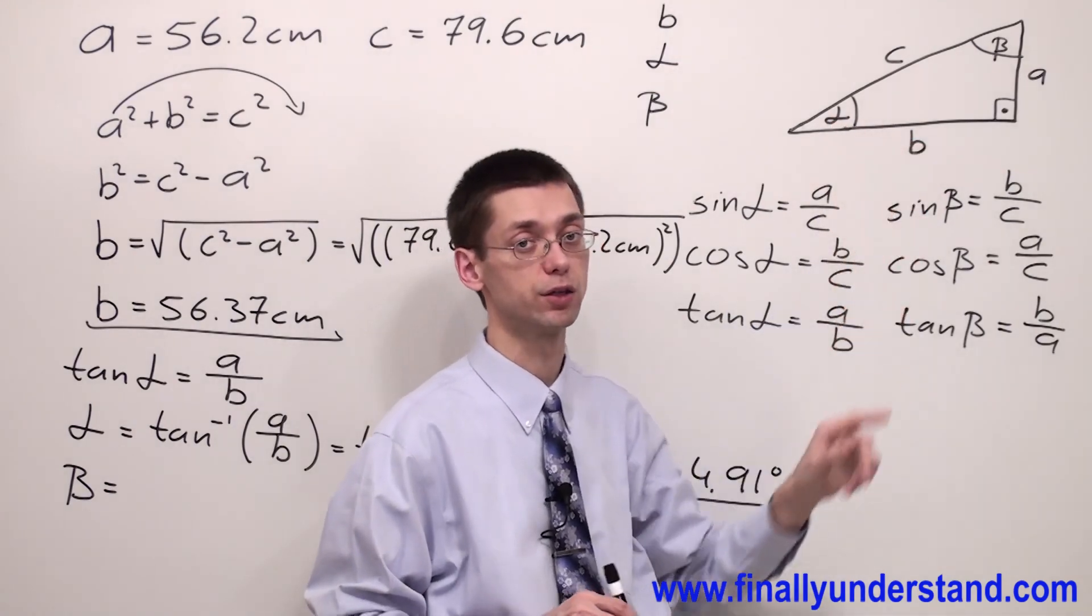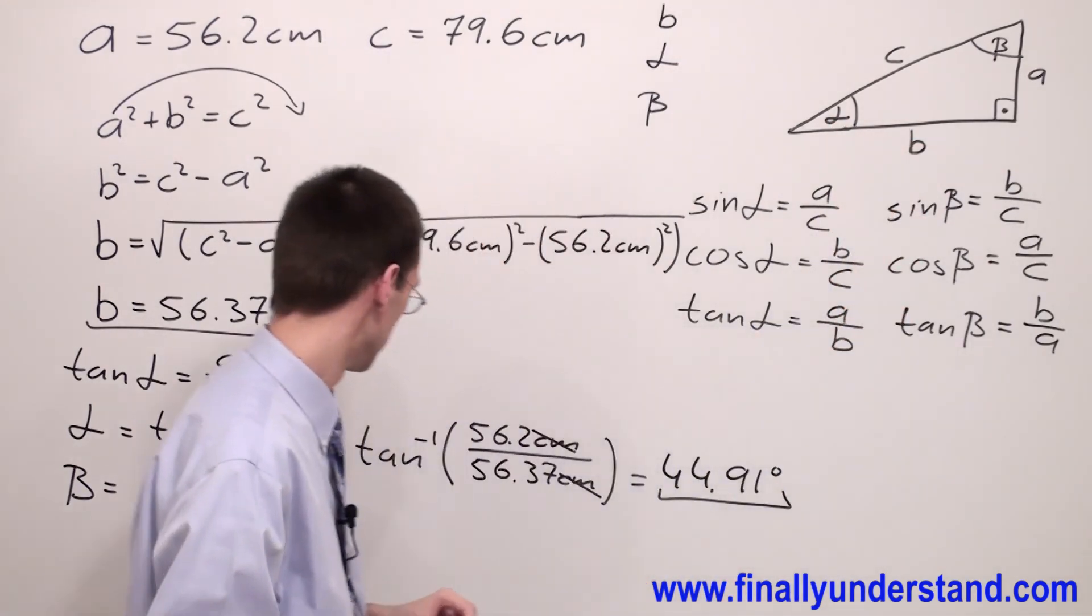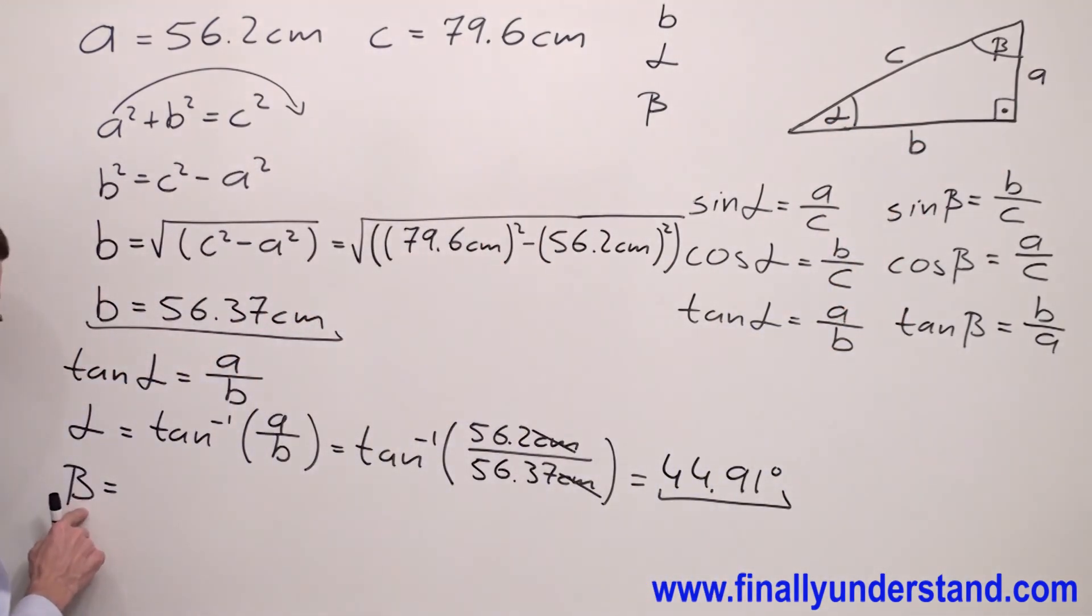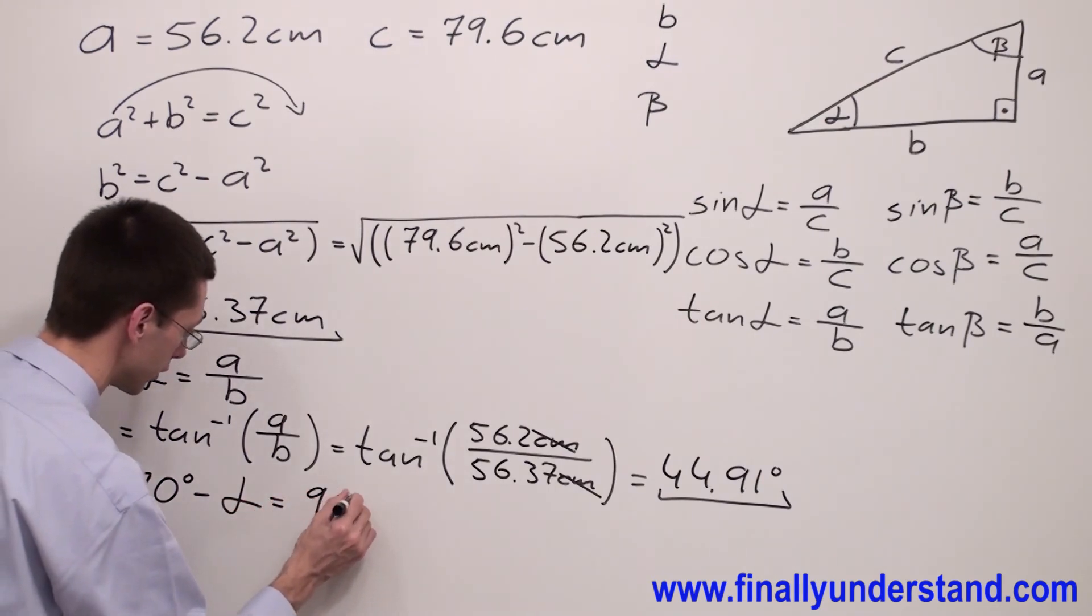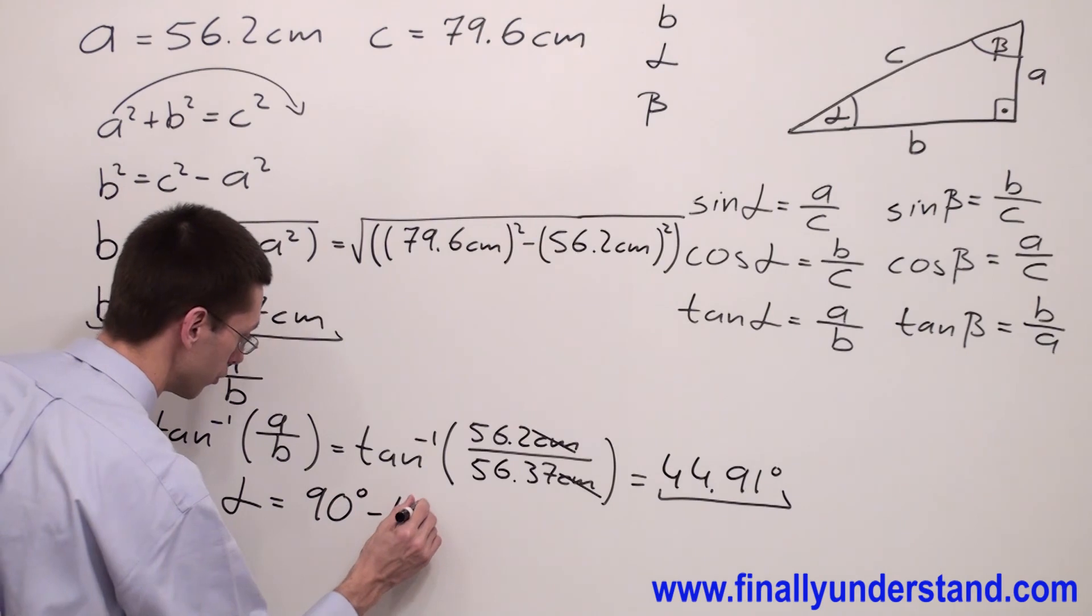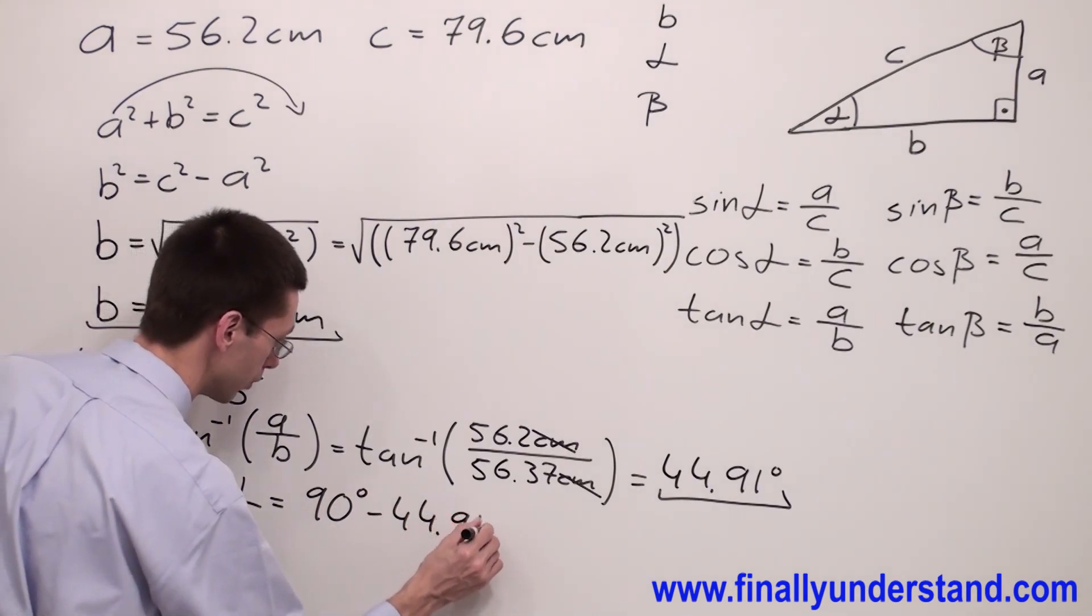If you want to find angle beta, let me remind you one more time that the sum of these two angles, I mean alpha and beta, is equal to 90 degrees. So if you want to find angle beta, you're supposed to simply subtract from 90 degrees angle alpha.